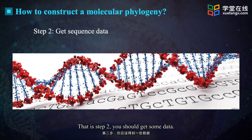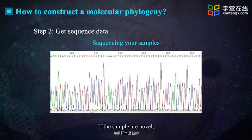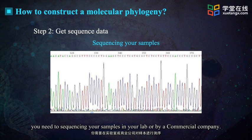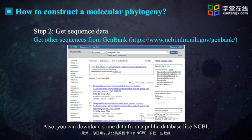That is step two: you should get some data, usually DNA sequences. If the samples are novel, you need to sequence your samples in your lab or by a commercial company. Also, you can download some data from a public database like NCBI.